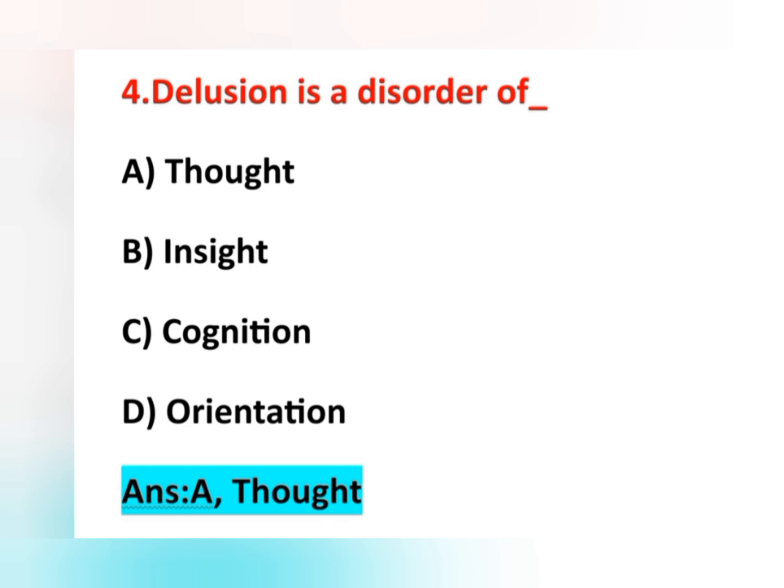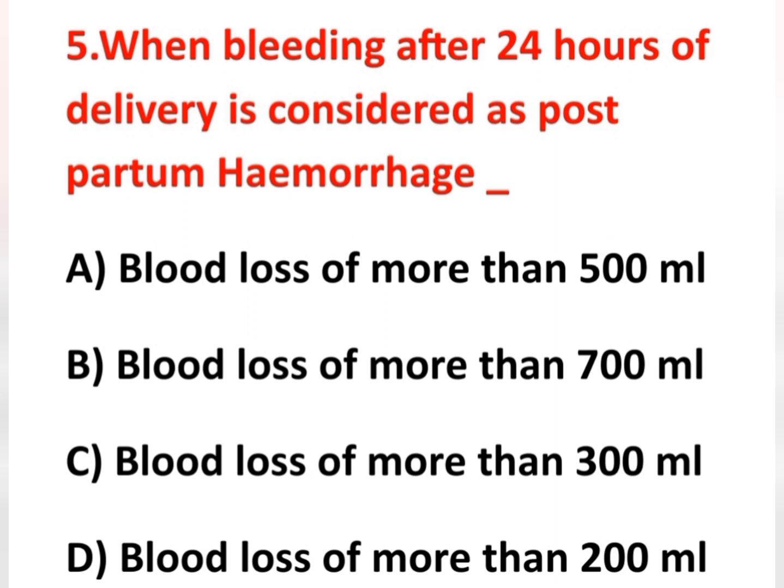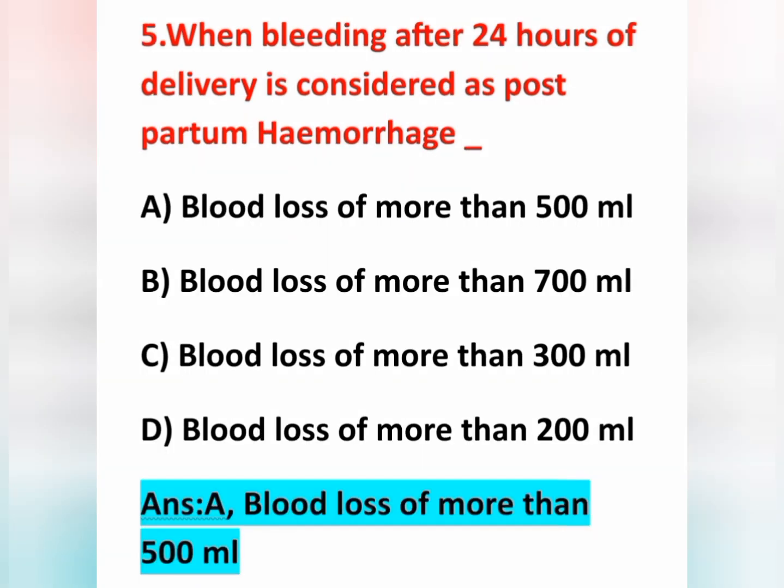Fifth question: Bleeding after 24 hours of delivery considered as postpartum hemorrhage — option A blood loss of more than 500 ml, option B more than 700 ml, option C more than 300 ml, option D more than 200 ml. The correct answer is option A — blood loss of more than 500 ml.